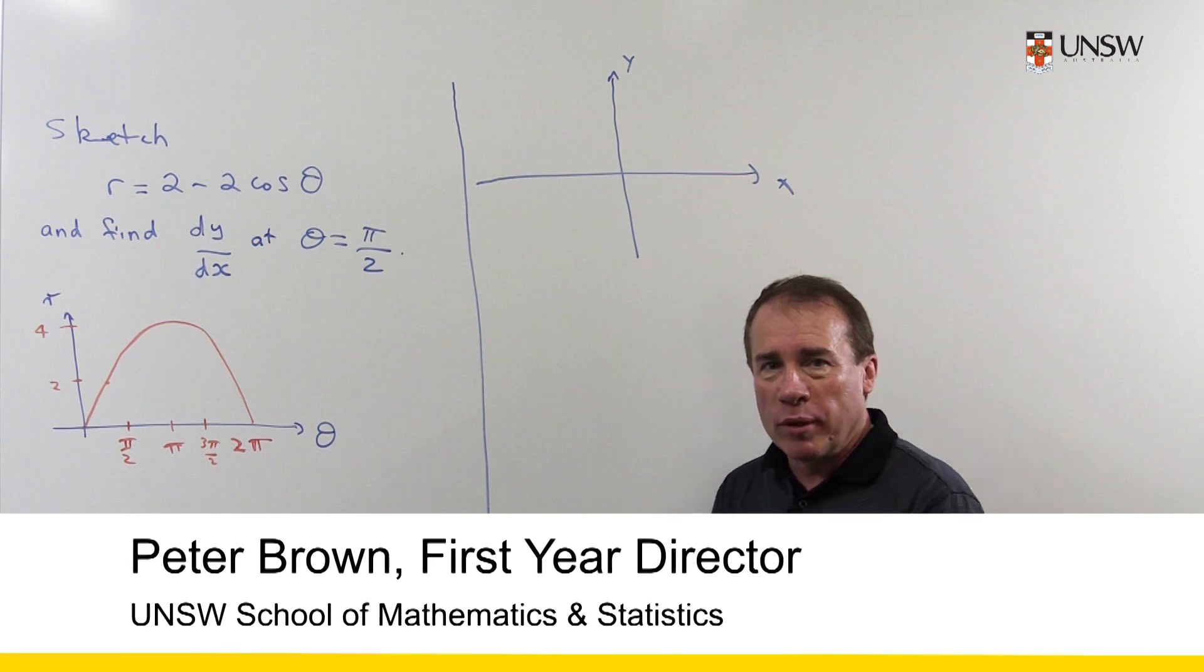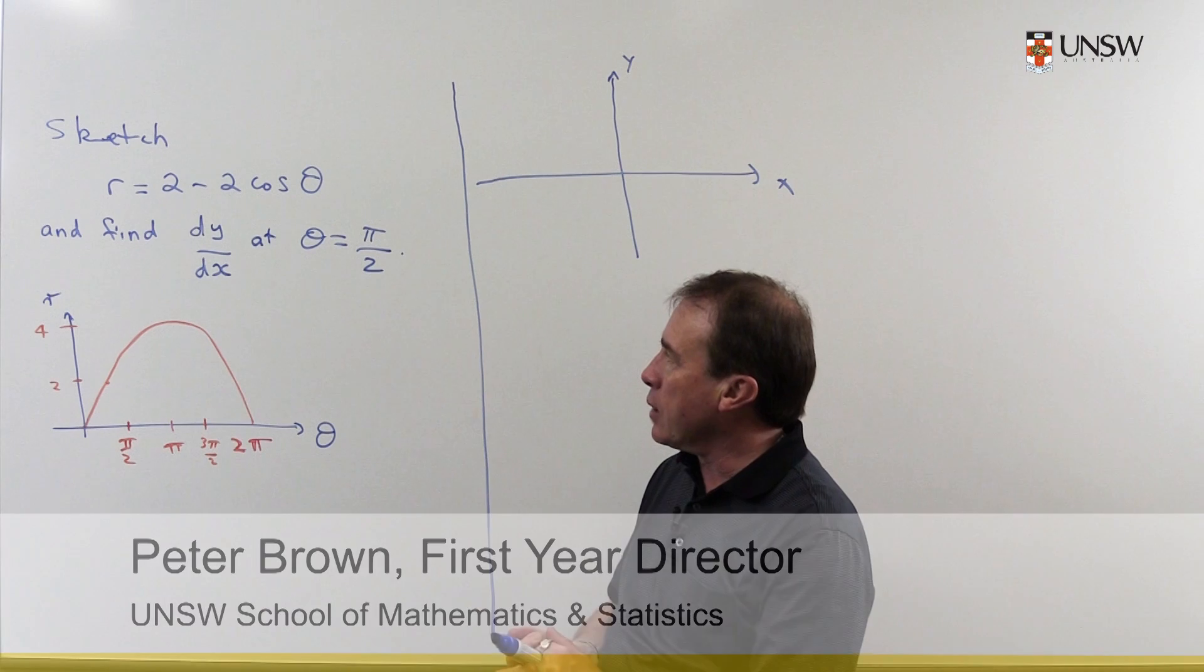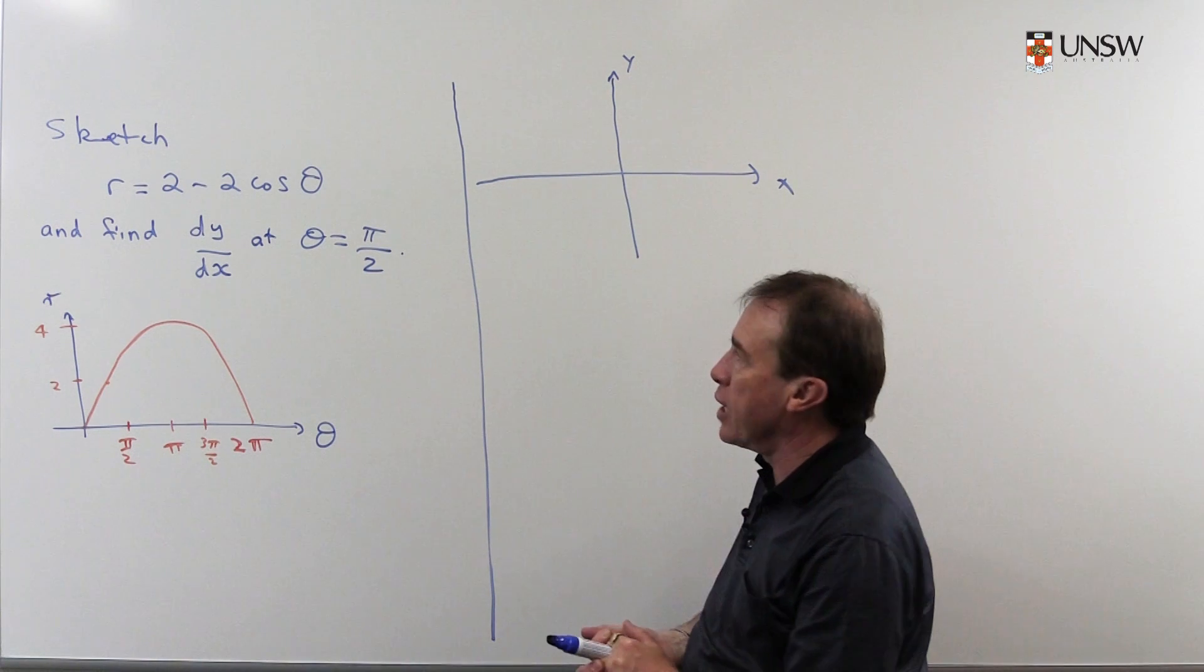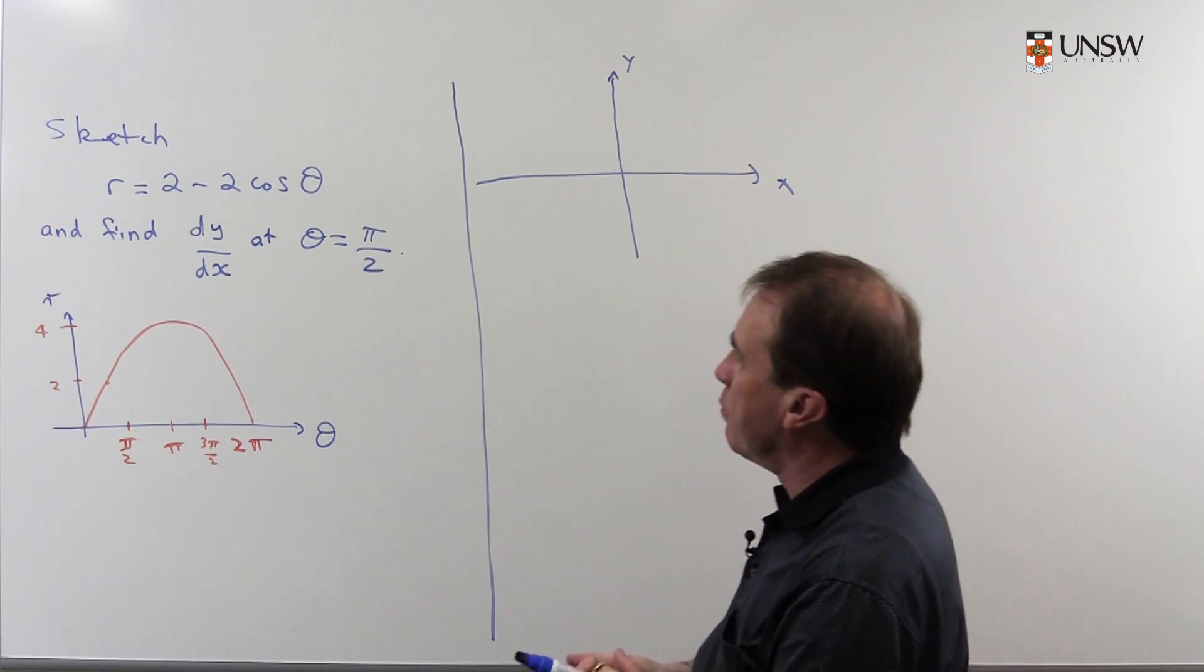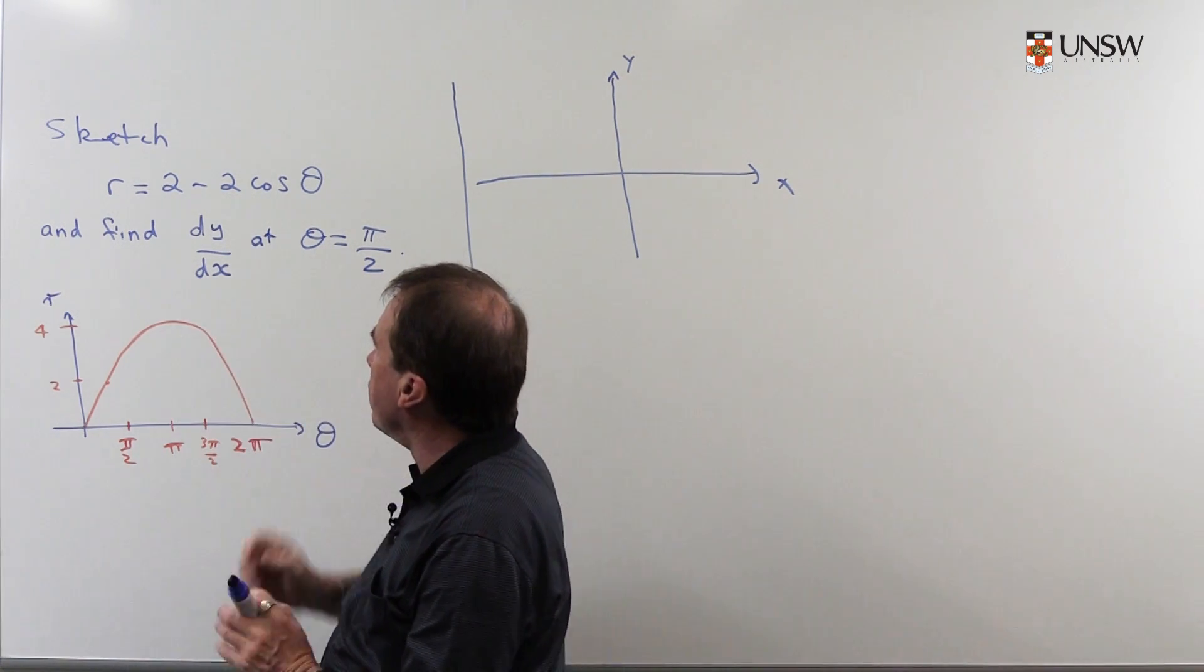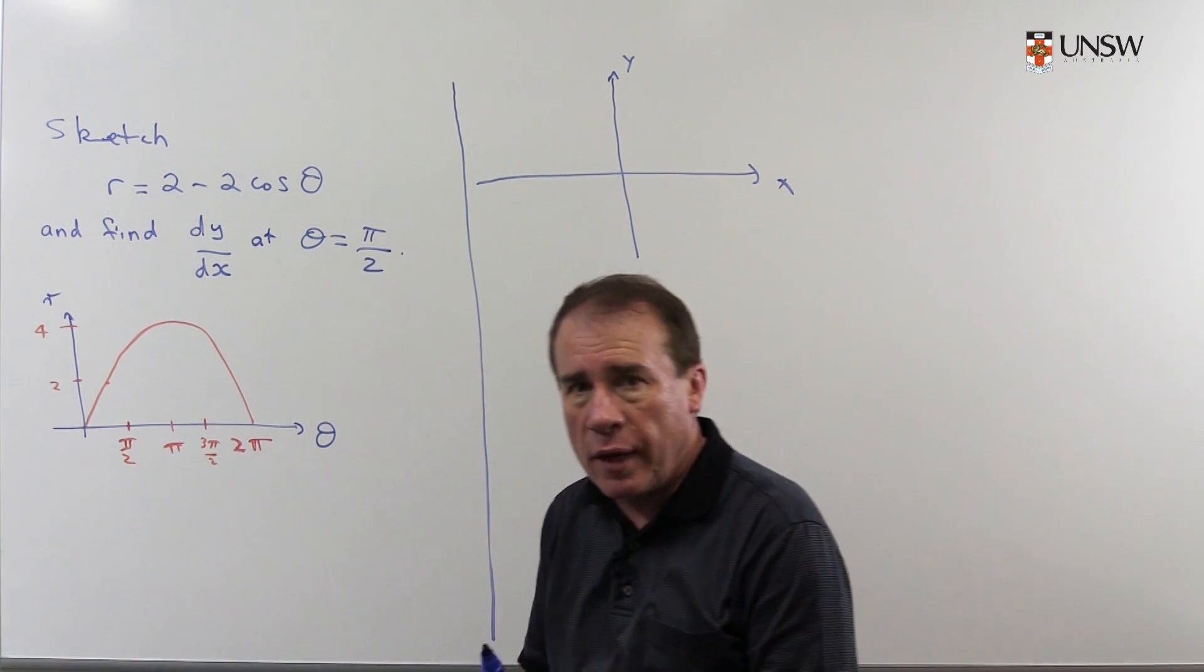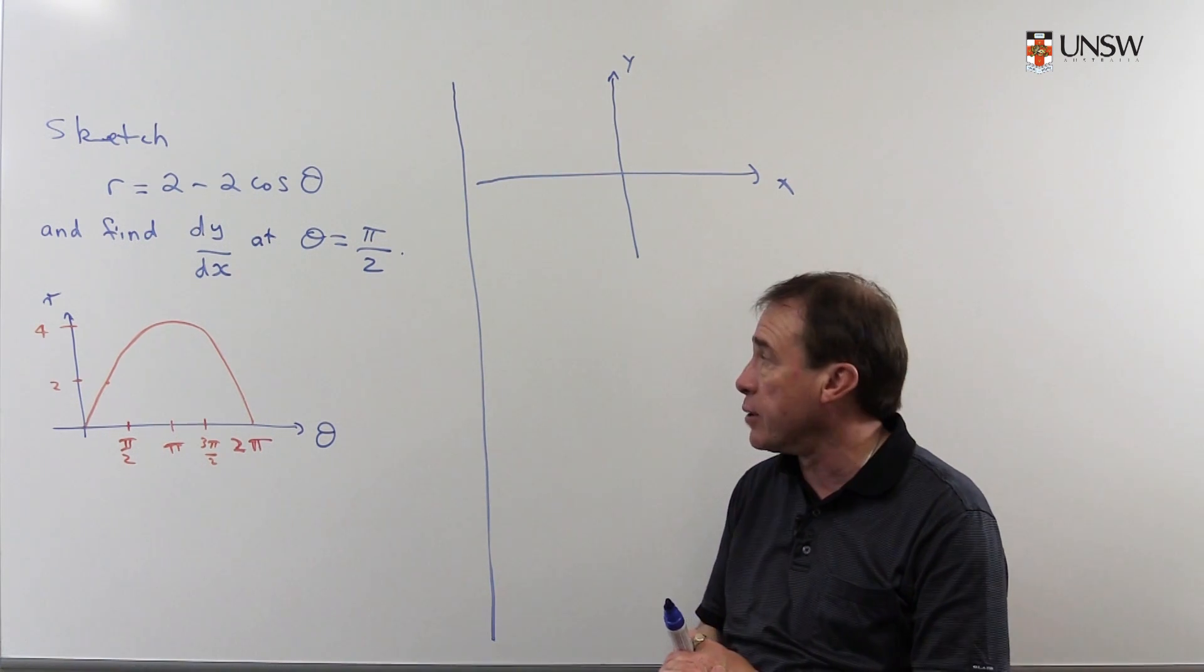Hello, so in this problem we're going to sketch a polar curve r = 2 - 2cos(θ). When they ask us to sketch it, they mean to sketch it in the xy plane. I'm then going to find, although it wasn't actually asked, the derivative dy/dx of this polar curve at θ = π/2, which may help give us useful information about the curve itself.